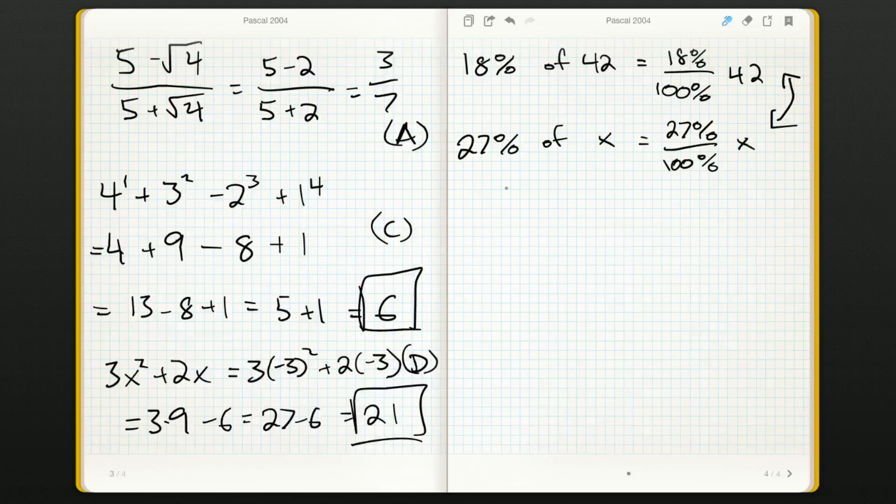These have to be equal, so let's set that equation up: 18% over a hundred percent times 42 equals 27% out of a hundred percent times x. You could grab your calculator and simplify the left hand side, but I realize both sides have a hundred percent on the bottom, so why not just multiply by a hundred percent?